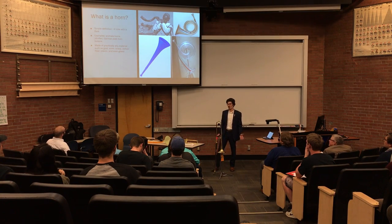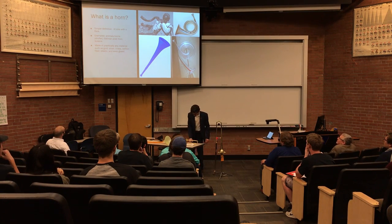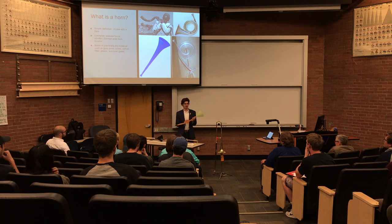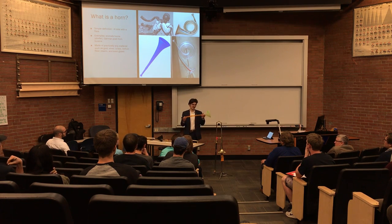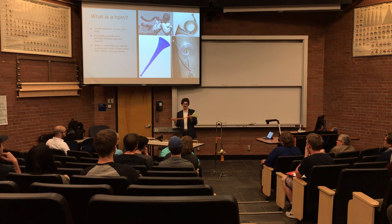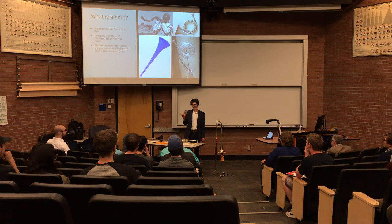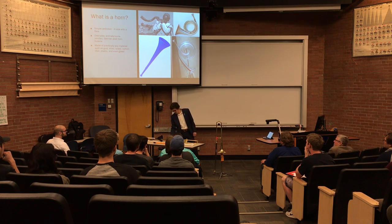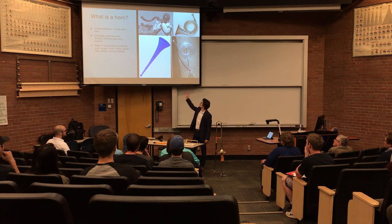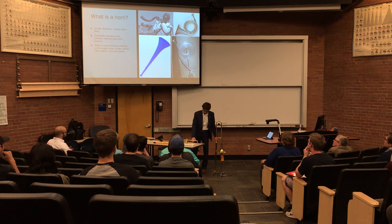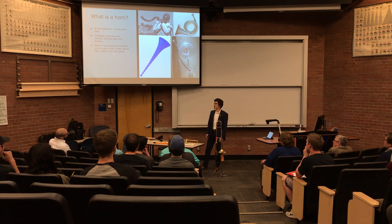To begin — what is a horn? Very simply put, a horn is a tube with a flare on the end. Something as simple as a beer bong becomes a horn. Other examples are actual animal horns — this is a shofar, a Jewish ritual instrument. There are also German post horns and many others; they can be made out of almost any material. Most recently, they've been developing carbon fiber trombones for very light and quick sliding.